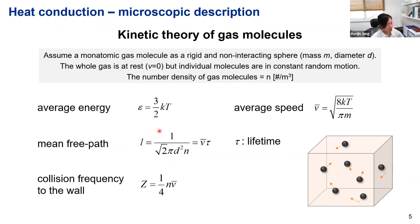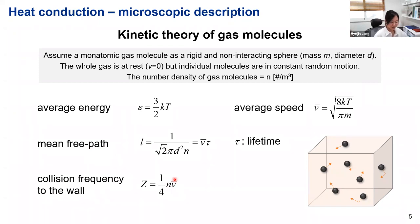The mean free path can also be described equivalently by the lifetime of a gas molecule — the time between scattering events — where the mean free path is simply velocity times lifetime. Another important parameter is the collision frequency to the wall, which is one-quarter of the molecular density multiplied by their average speed. Using these properties from kinetic theory, we can actually derive Fourier's law at the microscopic scale.